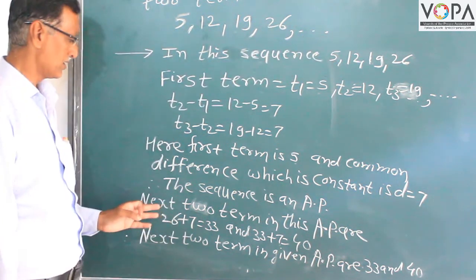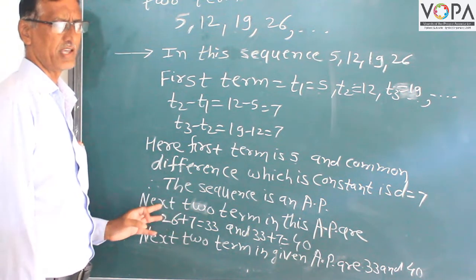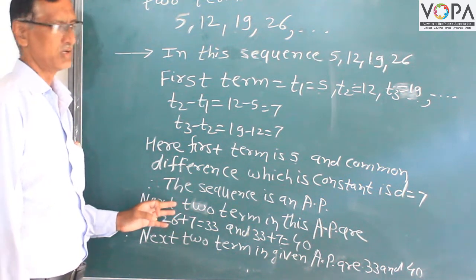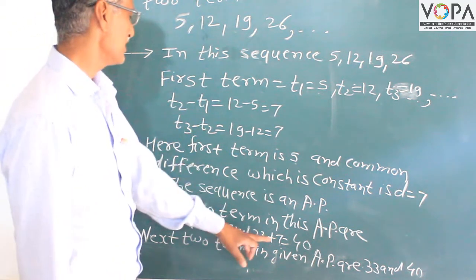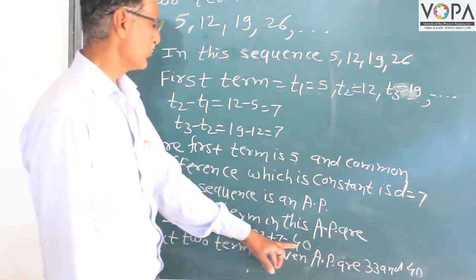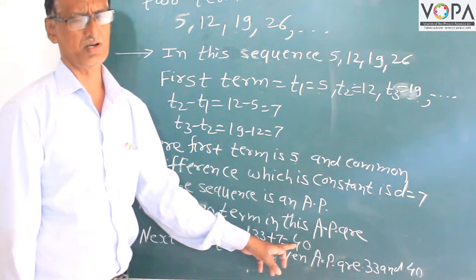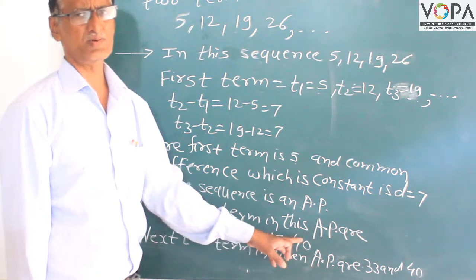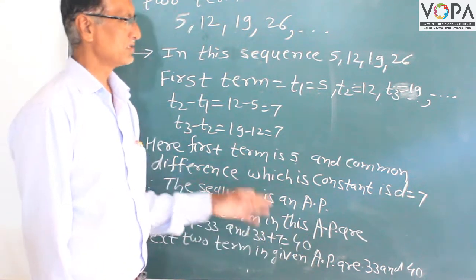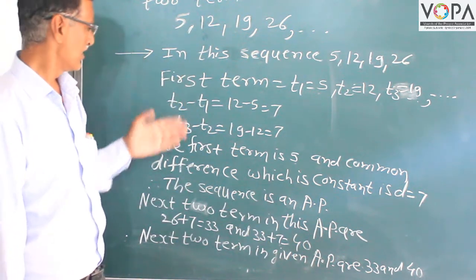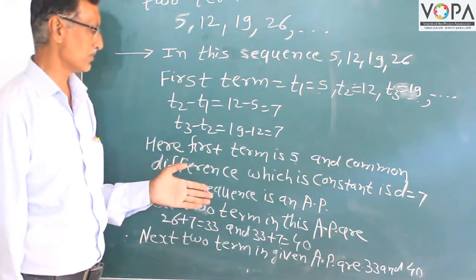You can also calculate the next three, four, or five terms. 33 plus 7 is equal to 40. 40 plus 7 is equal to 47. 47 plus 7 is equal to 54. Similarly, you can calculate the next few terms.